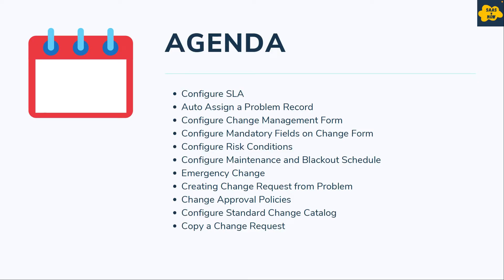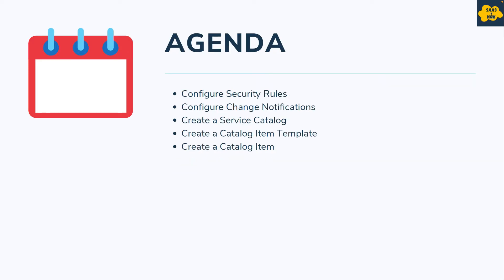We will configure change approval policies, standard change catalog, copying a change request, security rules, and change notifications. We will also see how you can create a service catalog, how to create a catalog item template, and how exactly you can create a catalog item. This is the agenda of the course.